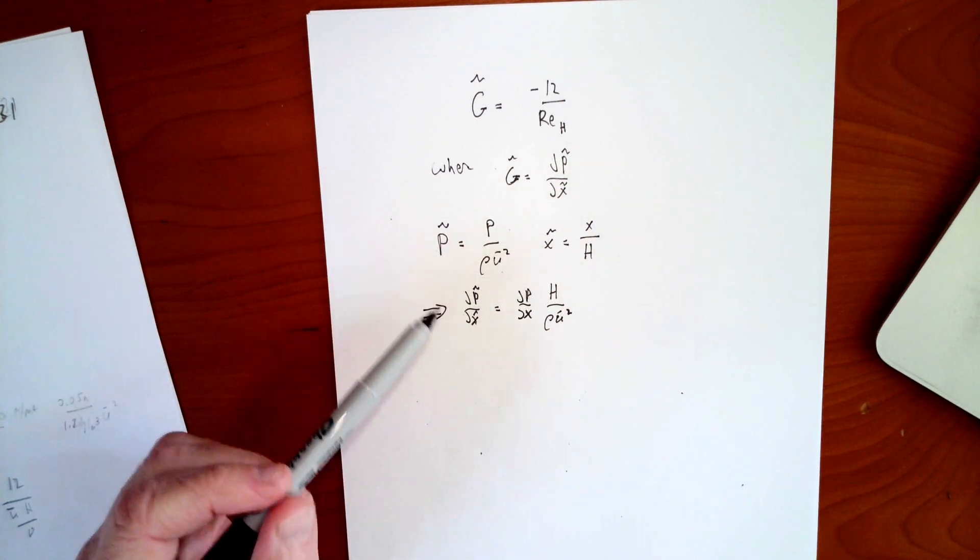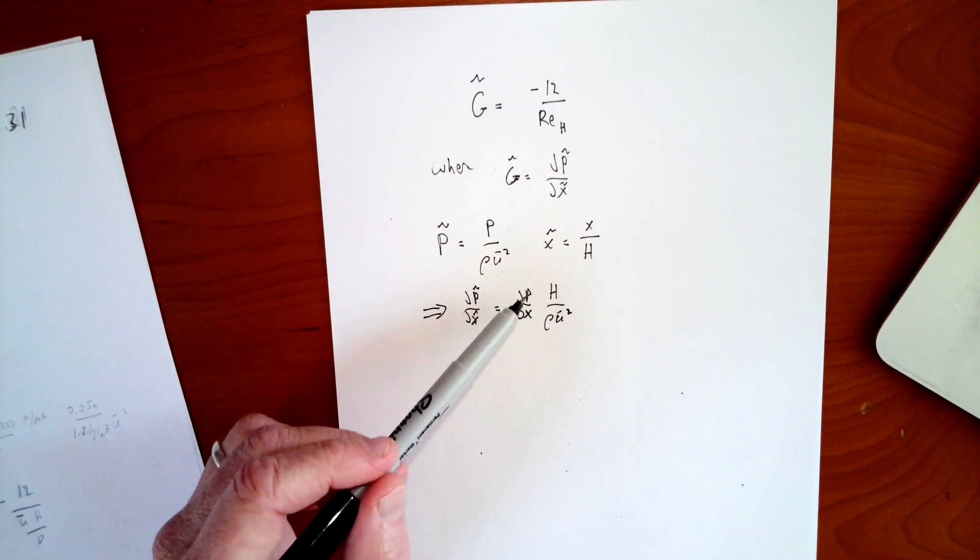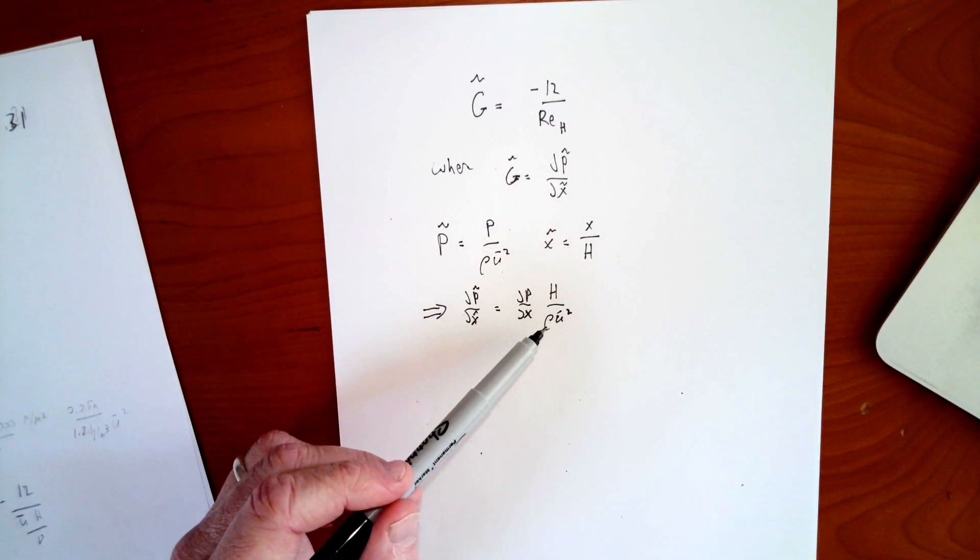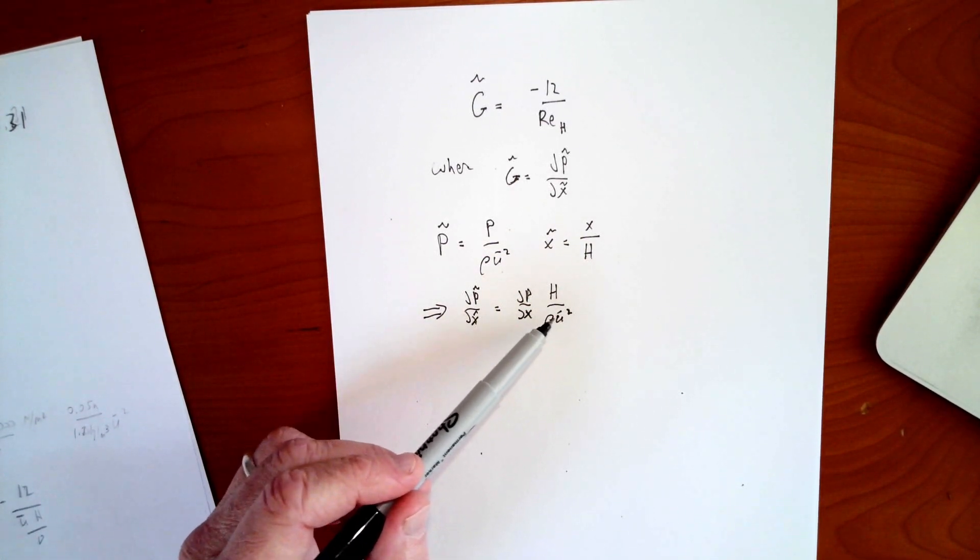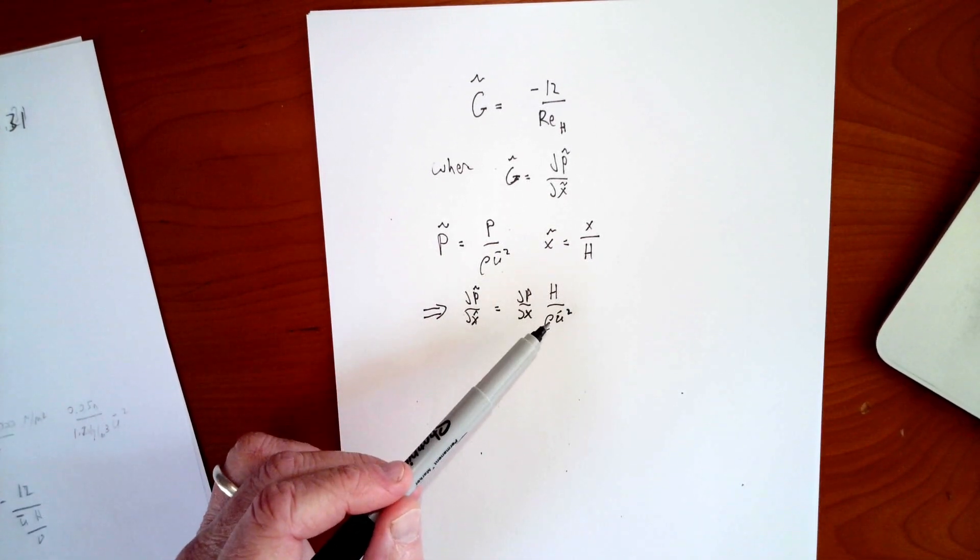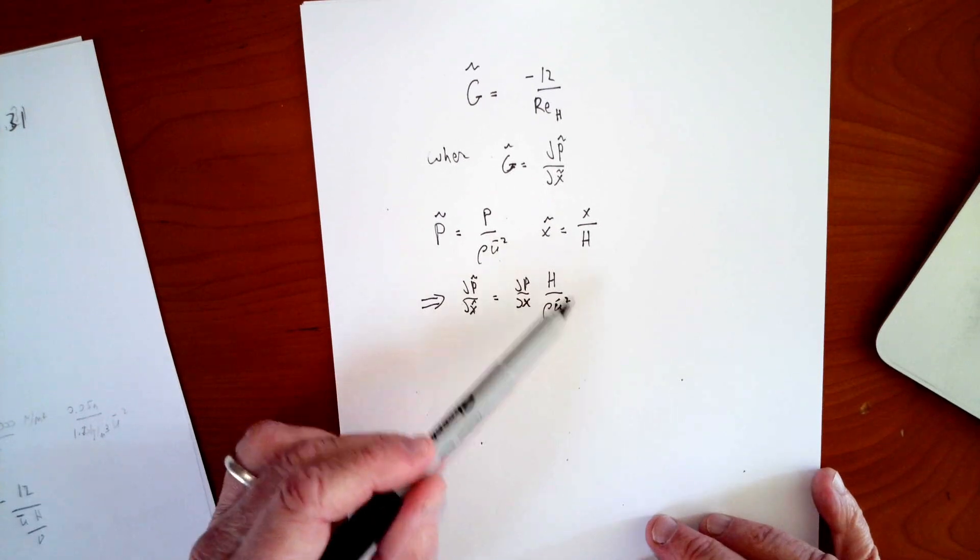So as we showed last lecture, the dimensionless pressure gradient is the actual pressure gradient times h and divided by rho, in our case, average velocity squared, because that's what we define the characteristic velocity to be.